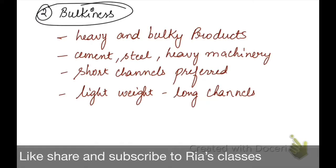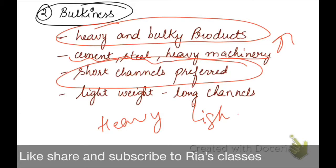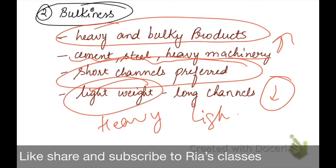The next characteristic related to our product is bulkiness — whether our product is heavy or light — which also determines which channel we will use. For example, if our product is heavy and bulky, like cement, steel, or heavy machinery, the handling cost is very high, so in this case we prefer short channels. But if we talk about lightweight products like garments, stationery, toothbrushes, or calculators — which are small-sized products with lower handling costs — we can use long channels for them. So whether our product is heavy or light determines which channel we prefer for distribution.